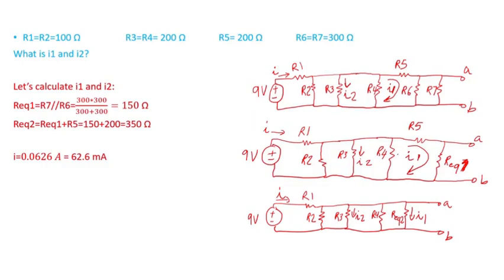In the second circuit, I redrew it with the equivalent of R6 and R7, which is R equivalent 1. In the third circuit, I redrew R equivalent 1 in series with R5, calling that sum R equivalent 2 for simplicity, using the equivalent resistances calculated previously.